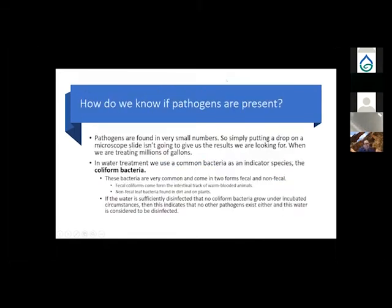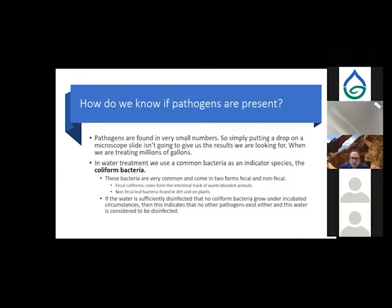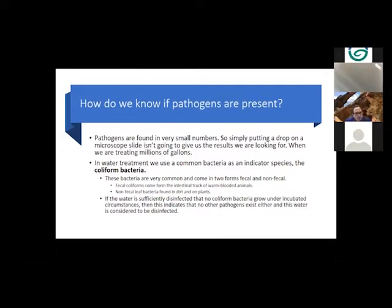How do we know if pathogens are present? Pathogens are found in very small numbers, so simply putting a drop of water on a microscope slide when we're making millions of gallons a day won't guarantee we'll find the specific bacteria we're looking for. In water treatment, we use a common bacteria as an indicator species — in our case, coliform bacteria.